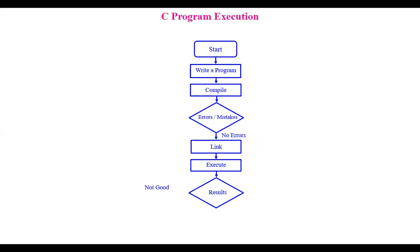At the execution stage, you get results. Suppose the results are not correct — for example, I want to add 2 plus 3 and should get 5, but the program gives 6. The syntax was fine so it passed the compiler with no errors, but the mistake is in the logic: instead of writing 2 plus 3, you may have written 2 multiplied by 3, giving 6 instead of 5. You have to check your result.